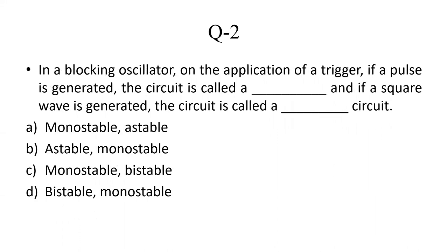The second question is: in a blocking oscillator, on the application of a trigger, if a pulse is generated, the circuit is called monostable, and if a square wave is generated, the circuit is called astable. So the answer is Option A: monostable and astable.